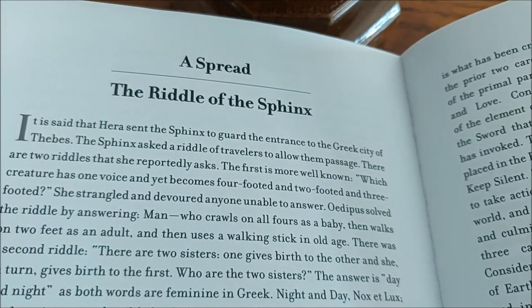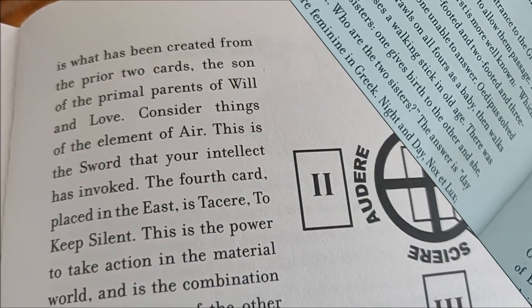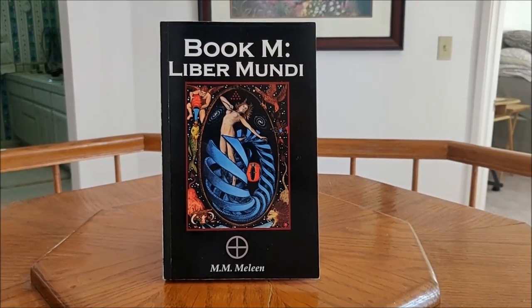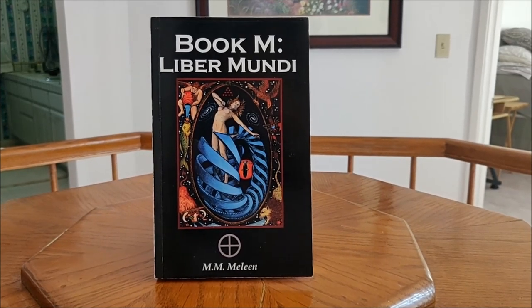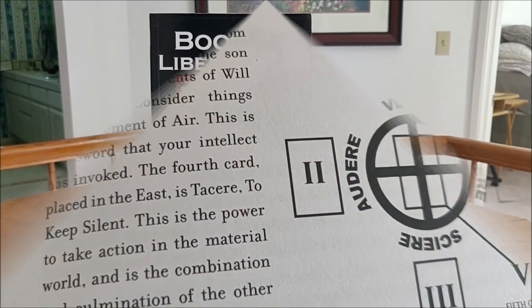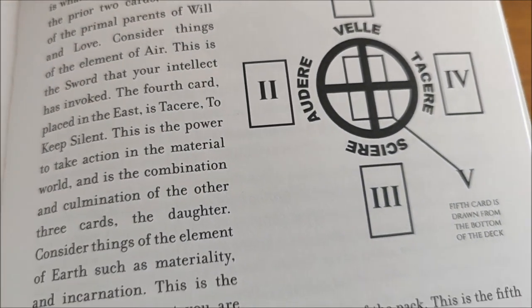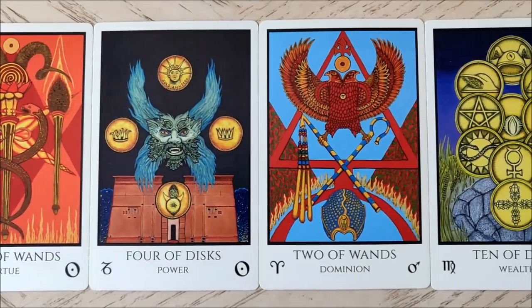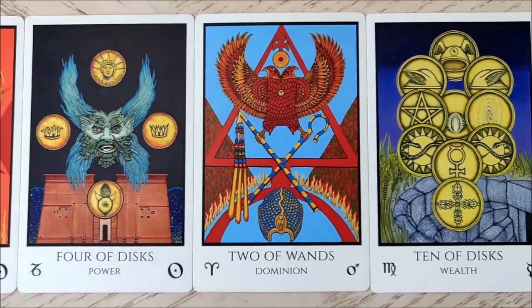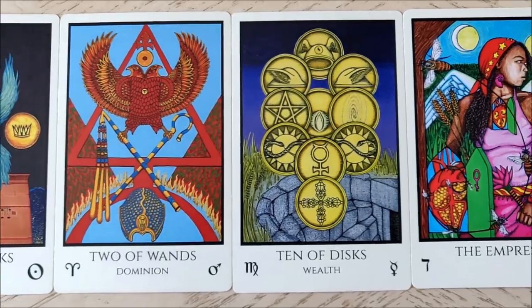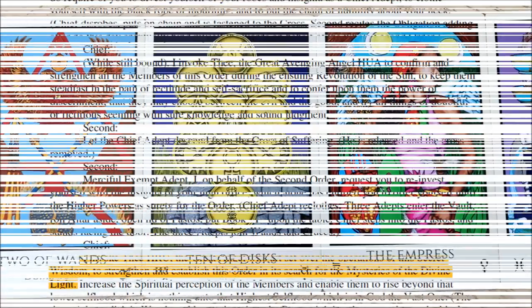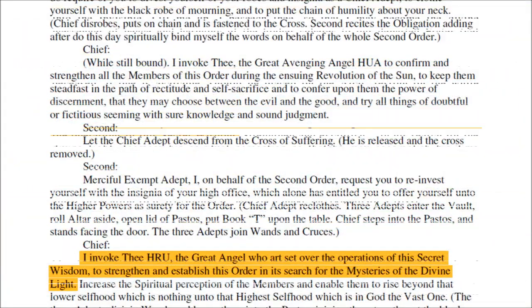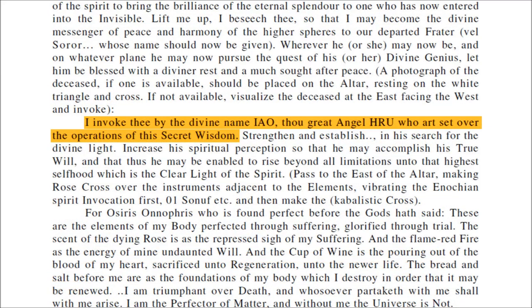Today I'll be guiding you through the Riddle of the Sphinx tarot spread from Book M: Liber Mundi by M.M. Malin, published in 2015. Book M is the companion guidebook to Malin's deck the Tabula Mundi Tarot, which, if you don't already know, is one of my favorite tarot decks ever. We'll also be referencing Israel Rigardi's books to supplement the reading experience.